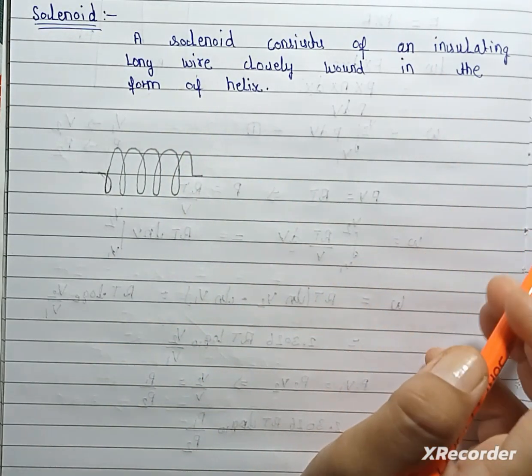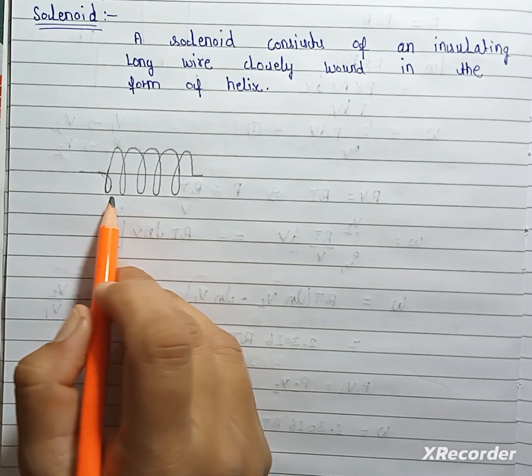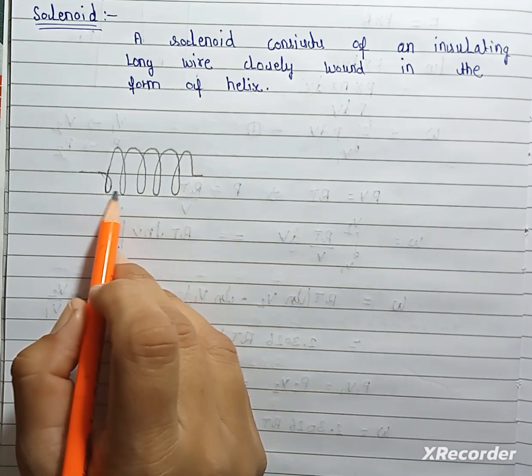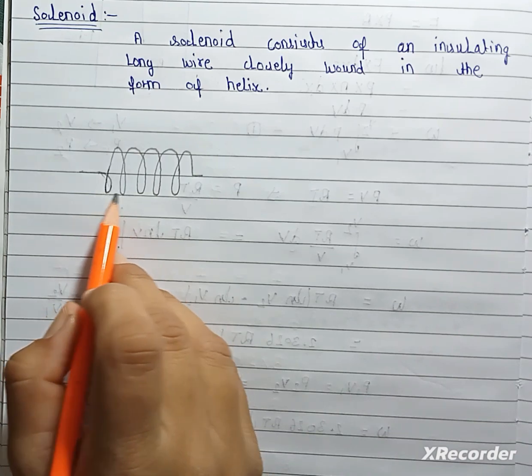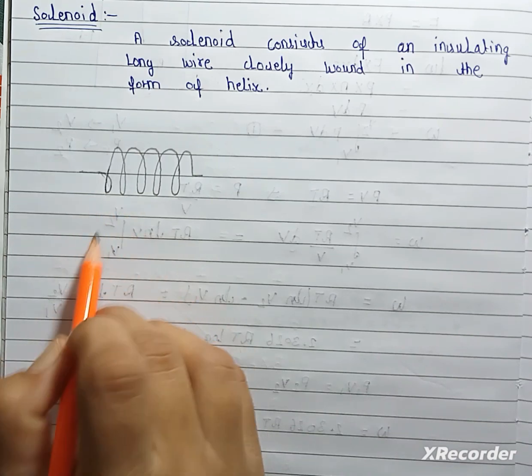Insulating long wire means each turn of this solenoid are insulated from each other.